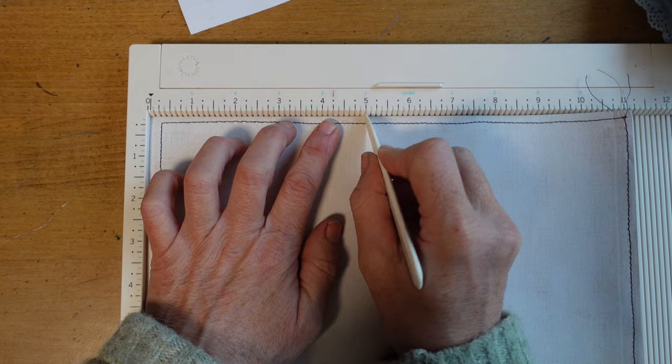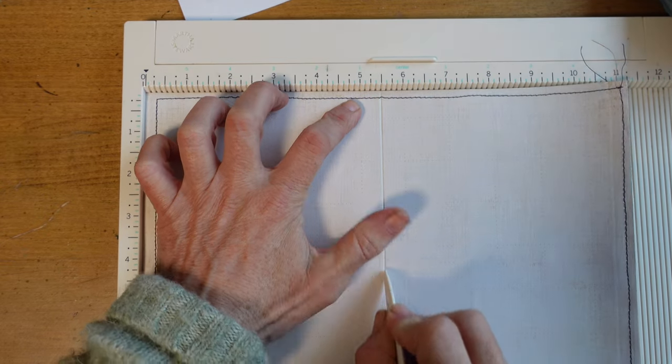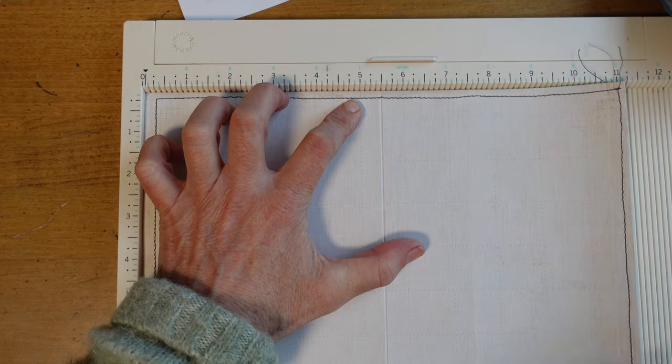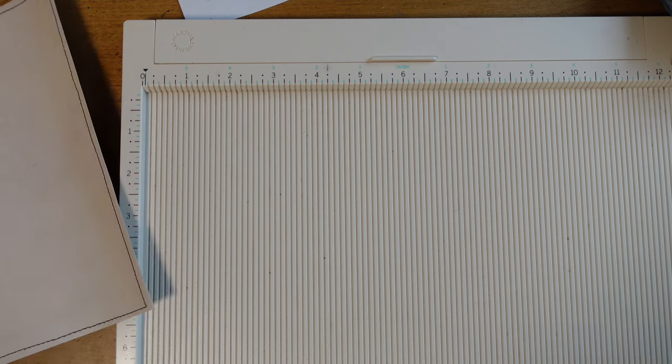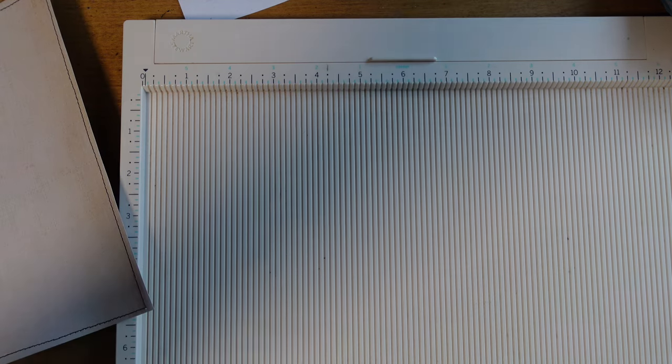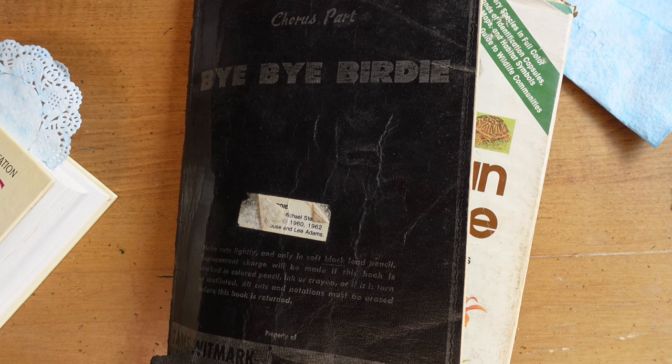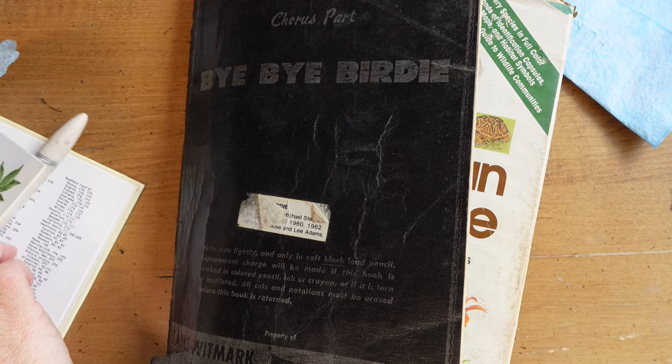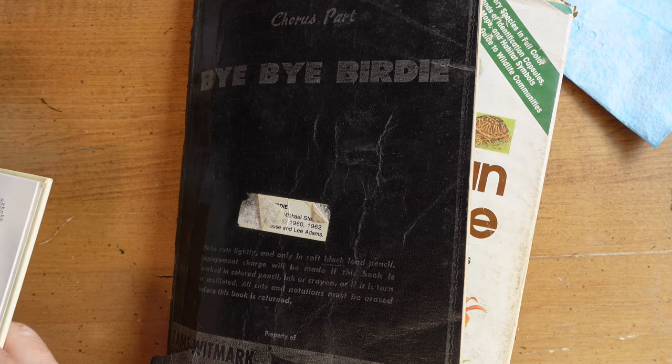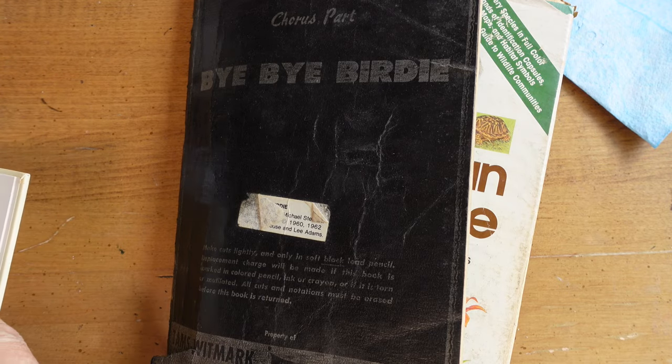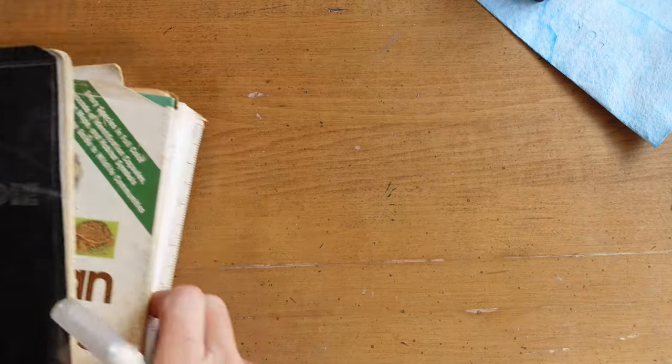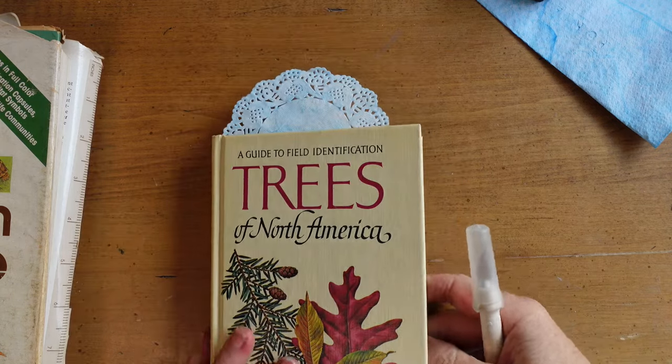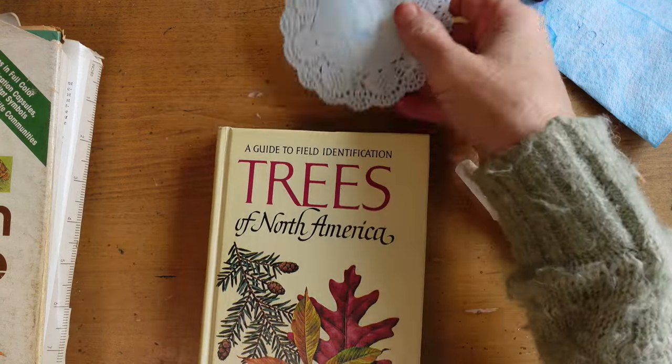So now I'm going to score it here with a scoreboard. And these papers, I left 11 - they came 11 in the pack. They were 8 and a half by 11. And so I went to the center, which was 5 and a half, and ran down the bone folder to create a score line. And I think now we're going to bone fold them.